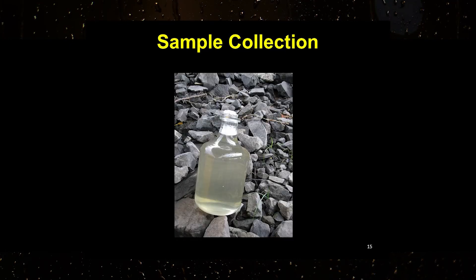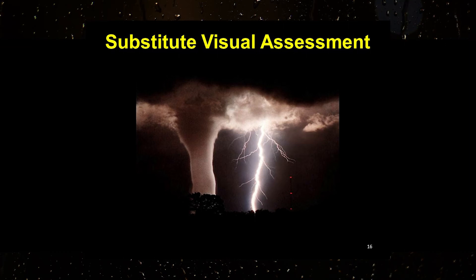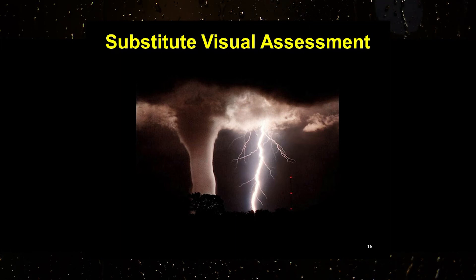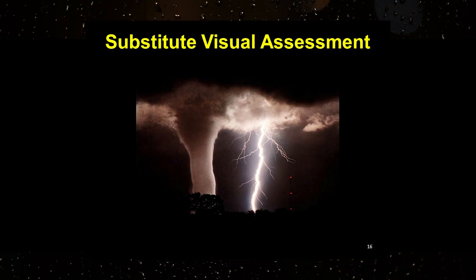Samples will need to be collected in a clean, clear container for visual assessment. Should adverse weather conditions create inaccessibility or dangerous conditions for personnel, a substitute visual assessment shall be conducted during the next qualifying storm event. Other adverse conditions include extended dry periods or extended cold periods where there is no snow melt. If you miss a qualifying event, you shall collect the visual sample during the next qualifying event, and the reason for the alternate sample must be included in the visual assessment documentation.